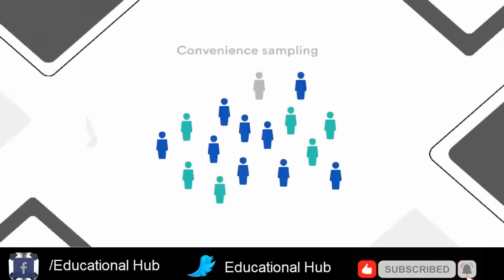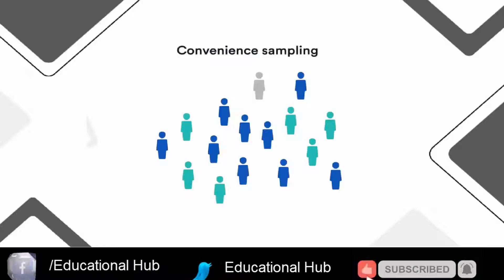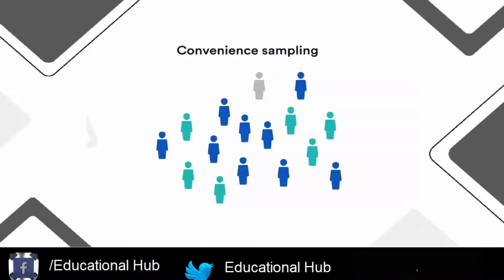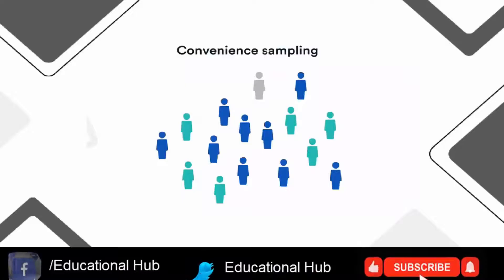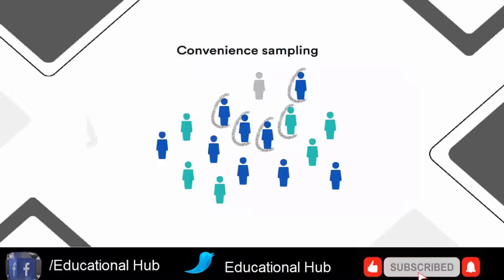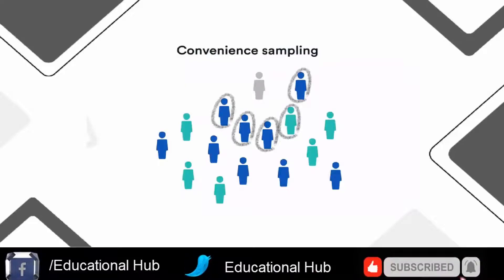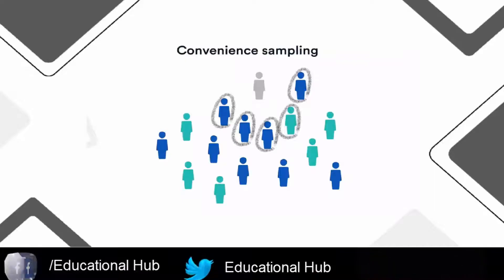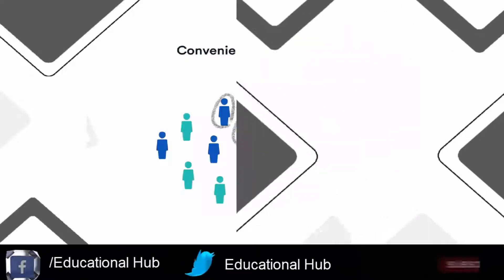1. Convenience sampling. A convenience sample simply includes the individuals who happen to be most accessible to the researcher. This is an easy and inexpensive way to gather initial data, but there is no way to tell if the sample is representative of the population.